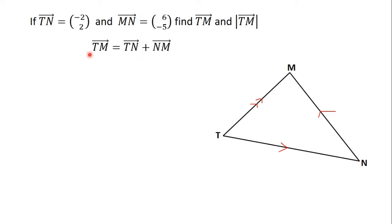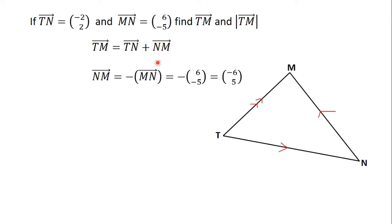From the triangular law of vector addition, vector TM is equal to vector TN plus vector NM. The question gave us TN as negative 2, 2, but it gave us MN — we are looking for NM. We know that NM is equal to minus MN, because NM is the inverse or the negative vector of MN.